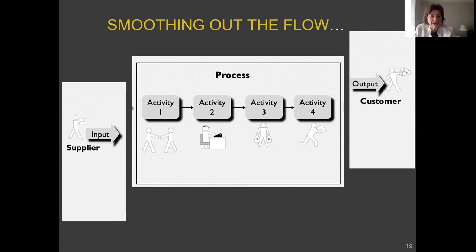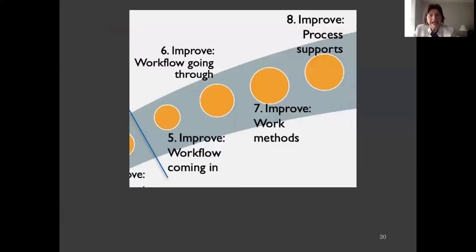As you go on to the next slide and look closely at the path, you can see on the other side of the blue line. We're going to improve the workflow as it comes in. We're going to improve the workflow going through. We're going to improve the work methods. And we're going to improve, which is often left out, process supports—what I call the materials, the equipment, the environment.